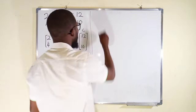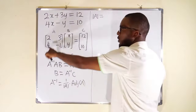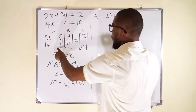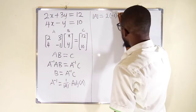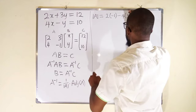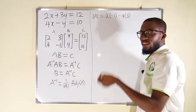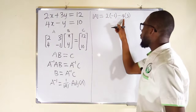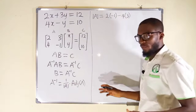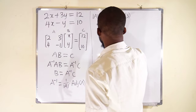So we are going to find the determinant of this matrix as well as the adjoint. Let me start by finding the determinant. The determinant will be equal to: you take the leading diagonals, 2 multiplied by negative 1, then you subtract the other diagonal, 4 multiplied by 3. 2 multiplied by negative 1 is negative 2, and 4 multiplied by 3 is 12. Negative 2 minus 12 is negative 14. So the determinant of this matrix is negative 14.